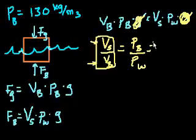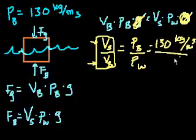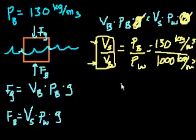And so that equals the density of balsa wood, which is 130 kilograms per meter cubed. So 130 divided by 1,000 is 0.13.